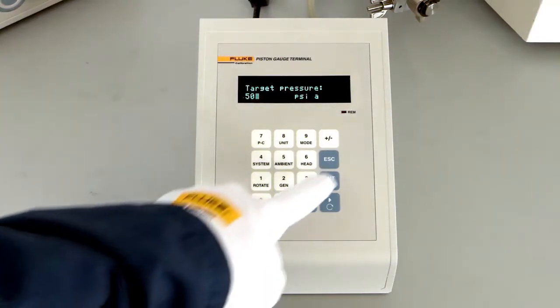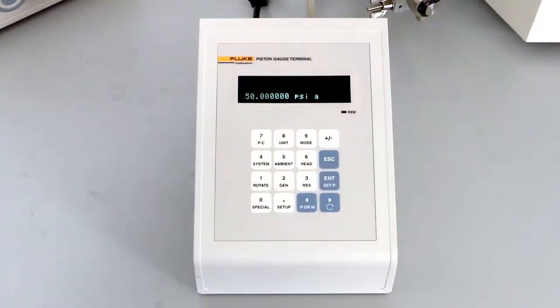This is the approach used on high-end piston gauges like the Fluke Calibration PG-7000 series. By using this approach with the right equipment, it is feasible to get the lowest uncertainties possible.